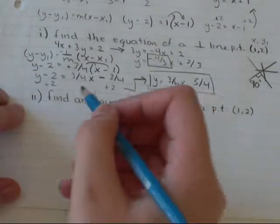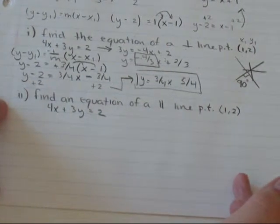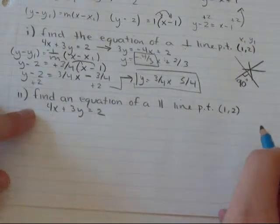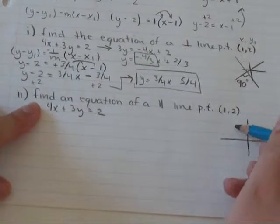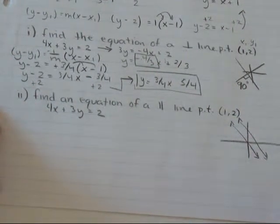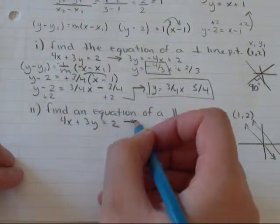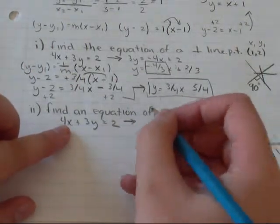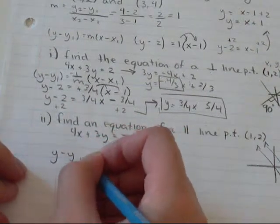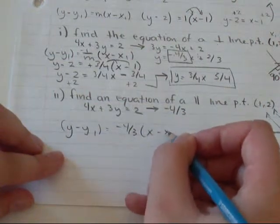Now, I'm going to still use 4x plus 3y equals 2. And I'm going to find an equation of a line parallel to 4x plus 3y equals 2, still passing through the point 1 comma 2. If you're graphing parallel lines, it basically means they will go on forever and never touch each other, never cross because their slope is exactly the same. I already found that the slope of this line equals negative 4 thirds.